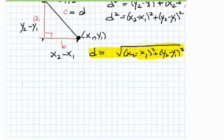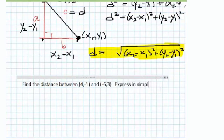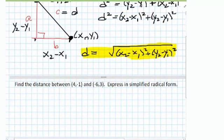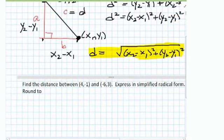For example, I might ask you to find the distance between the point 4, negative 1, and negative 6, 3. One thing I want you to pay attention to when you're doing your homework is that you will be asked to give both exact answers and rounded off answers. So the exact answer, express in simplified radical form. Also round off to two decimal places.